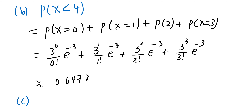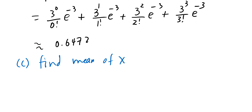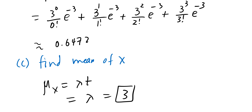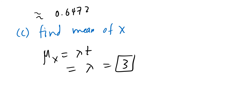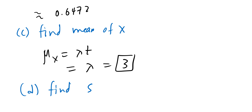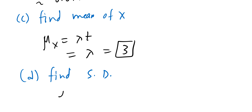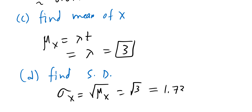Finally, find the mean and standard deviation of X. The mean is λt = 3 × 1 = 3. The standard deviation is √(mean) = √3 ≈ 1.7321.